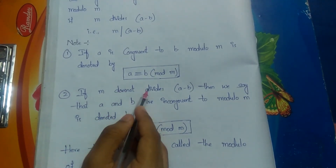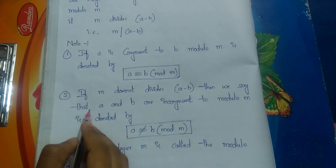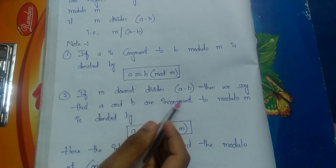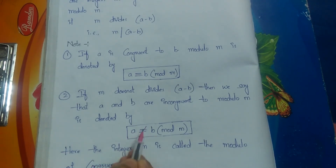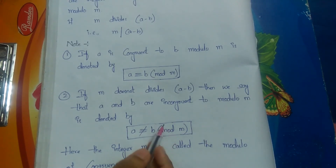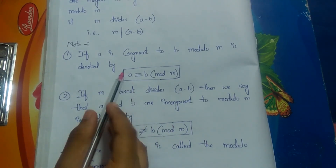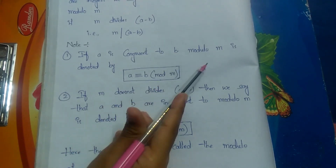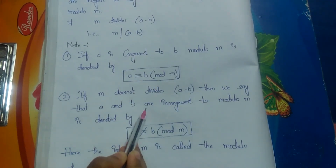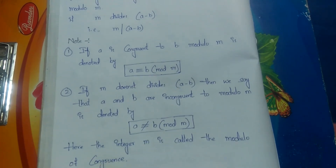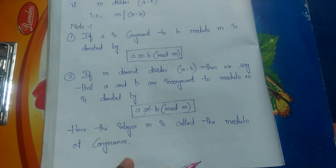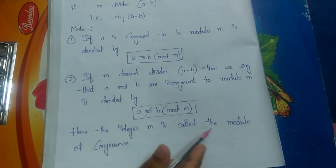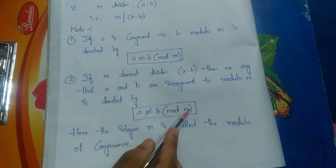The second note: if m does not divide a minus b, then we say a and b are incongruent modulo m, denoted as a is incongruent to b mod m. So we have two statements: congruent to modulo m and incongruent to modulo m. The integer m is called the modulo of congruence.